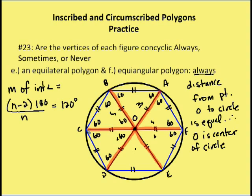Starting with a regular hexagon where all sides are congruent, I sliced it in half repeatedly along diameters BE, AD, and CF. This creates six equilateral, equiangular triangles. As a result, OB = OA = OF = OE = OD = OC — all radii from center O to each vertex are equal.